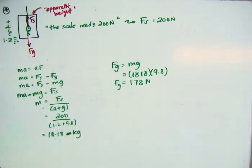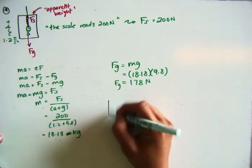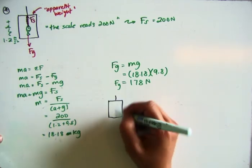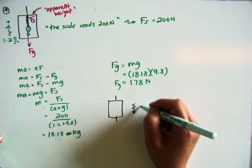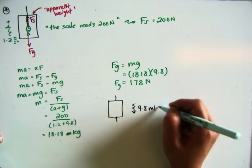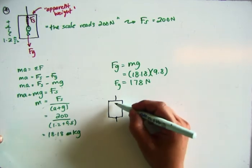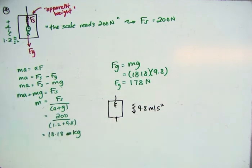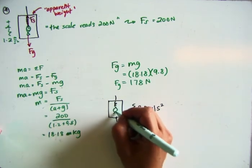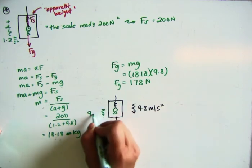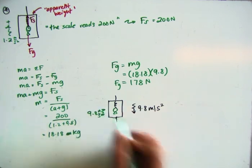And then it asks, what will the scale read if the elevator cable breaks? So if you think about it, if the elevator cable breaks, you've got the elevator that's suddenly accelerating down at 9.8 meters per second squared.